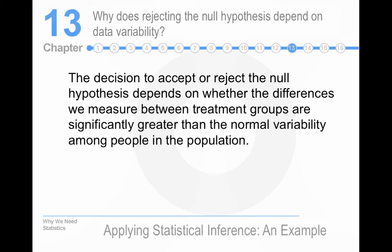Why does rejecting the null hypothesis depend on data variability? As I've been saying, really what statistical significance is, is the difference in means given the variability in the samples.